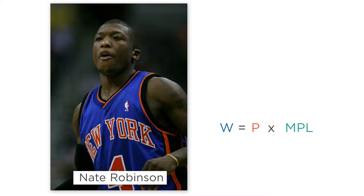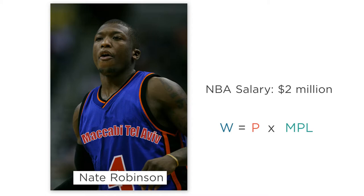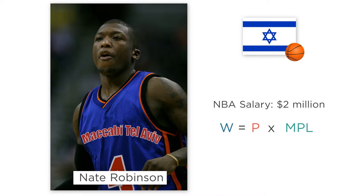Why? Because his marginal product of labor was low. But then he quit the NBA and signed with Maccabi Tel Aviv, the top team in Israel. What happened when he shifted to the Israeli league? Suddenly he was one of the best players in the league. He averaged 16 points per game. His marginal product of labor went through the roof. He was able to produce many more wins. So did his salary go up? If W equals P times MPL, and MPL goes up, shouldn't wage go up?